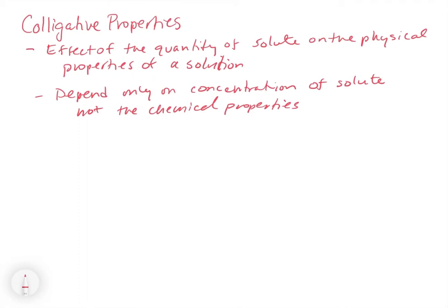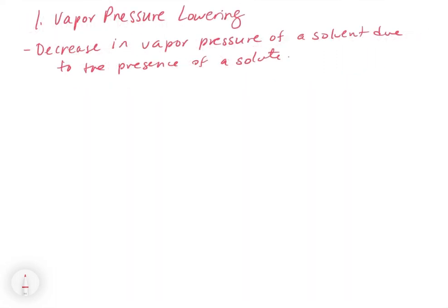The first colligative property we're going to look at is vapor pressure lowering. Vapor pressure lowering is a decrease in the vapor pressure of a solvent due to the presence of a solute.